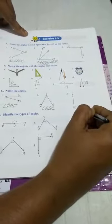You can see always the vertex comes in the middle. Next, question number 4. Identify the types of angle.